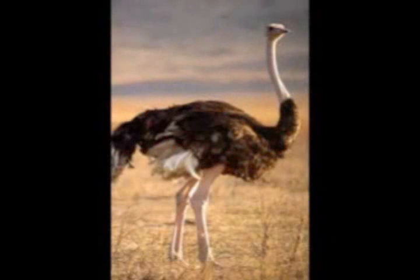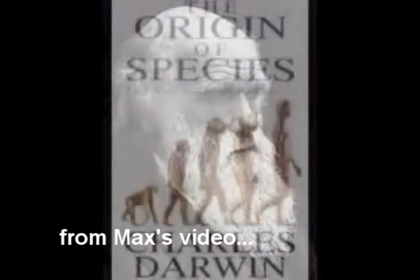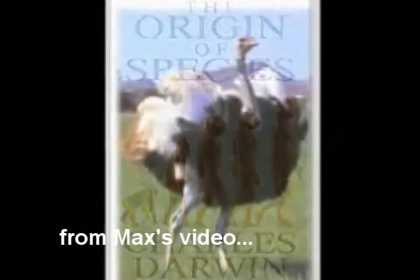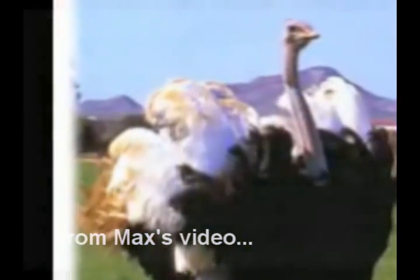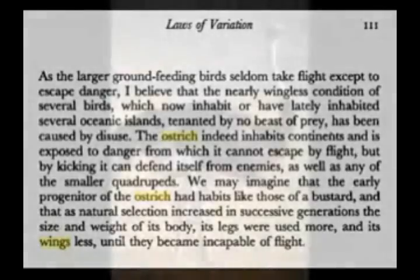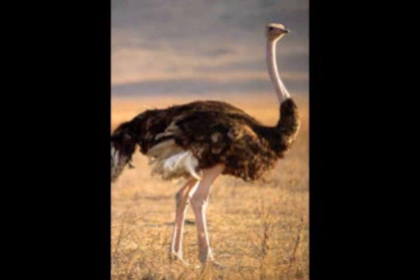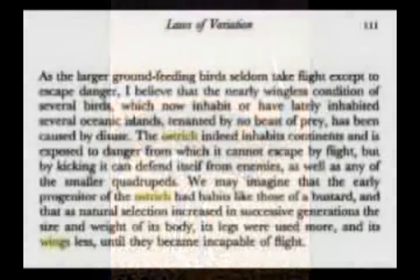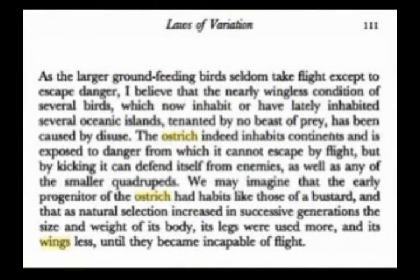Beginning his examination of these questions, he examples Darwin's observation of the ostrich. Darwin mentions ostrich wings in his book Origin of the Species, saying they are a vestigial part which serves little or no purpose. He then goes on to explain in Laws of Variation: 'As the larger ground-feeding birds seldom take flight except to escape danger, I believe that the nearly wingless condition of several birds which now inhabit or have lately inhabited several oceanic islands tenanted by no beast of prey has been caused by disuse. The ostrich indeed inhabits continents and is exposed to danger from which it cannot escape by flight, but by kicking it can defend itself from enemies as well as any of the smaller quadrupeds.'